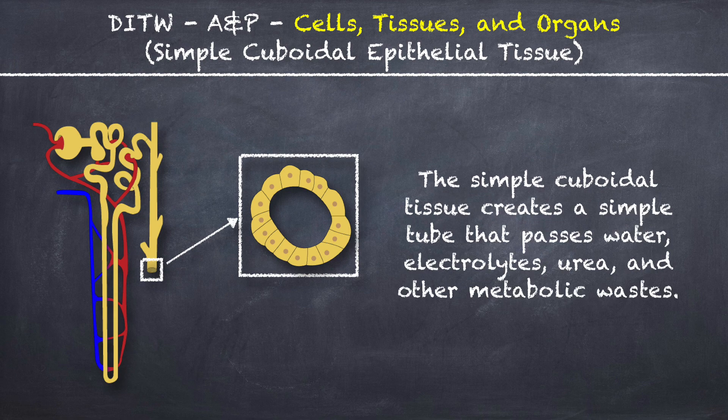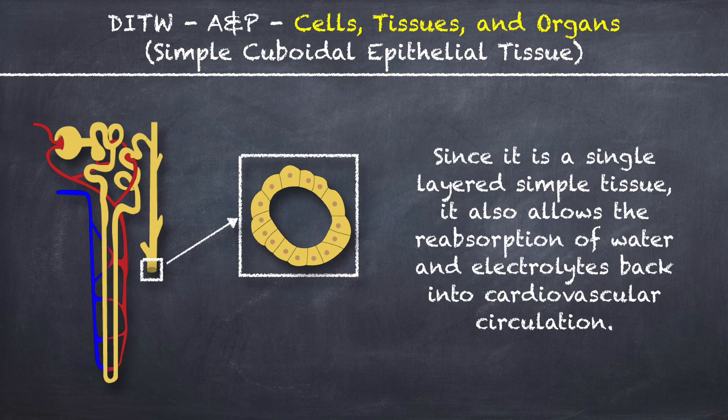The simple cuboidal tissue creates a simple tube that passes water, electrolytes, urea, and other metabolic wastes. Since it is a single layered simple tissue, it also allows the reabsorption of water and electrolytes back into cardiovascular circulation.